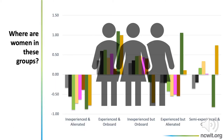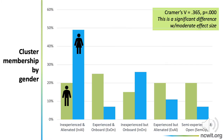So here's the question when we're thinking about broadening participation in computing: where are the women and other students from underrepresented demographics in these groups? This graph shows how women and men are distributed across the groups. There's a significant difference between men and women in their cluster membership with a moderate effect size. Women, represented by the blue bars, tend to cluster in the inexperienced and alienated group. But a significant number of women are also on board — high in everything but experience. There are also about 10% of women who have experience with programming but have been alienated. Men, the green bars, are distributed across all the groups — there are men who have experience and those who don't, men who feel like they belong in computing and those who don't.